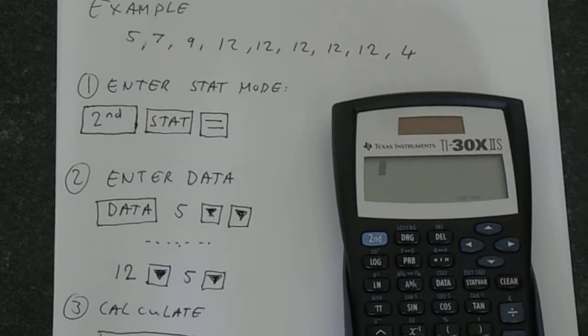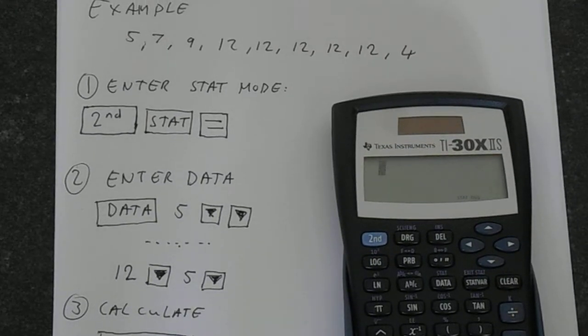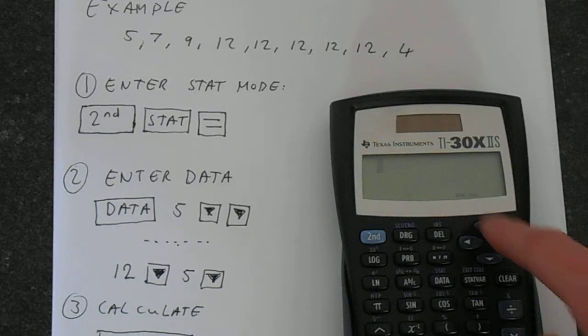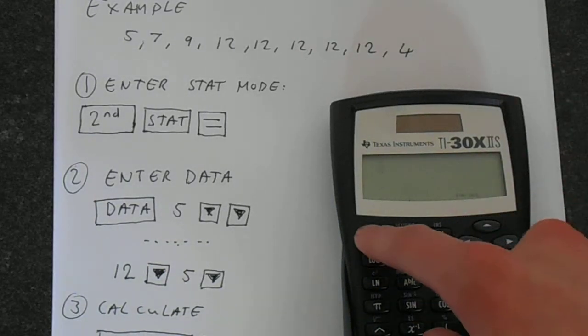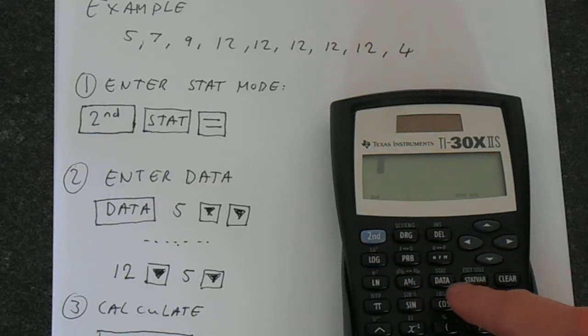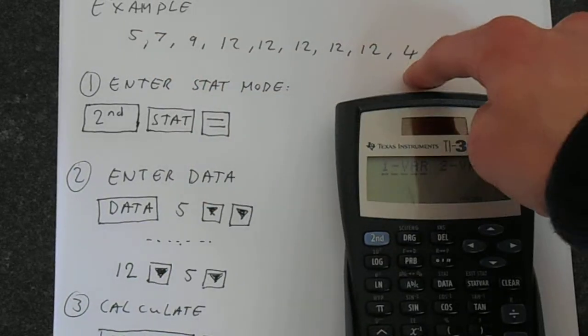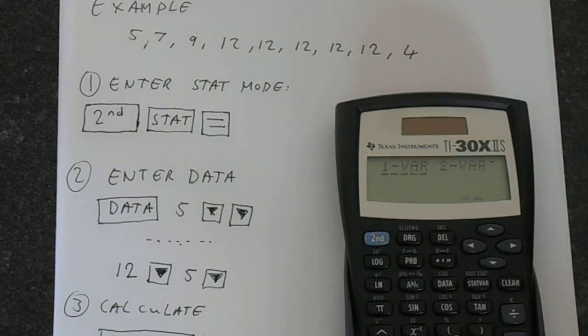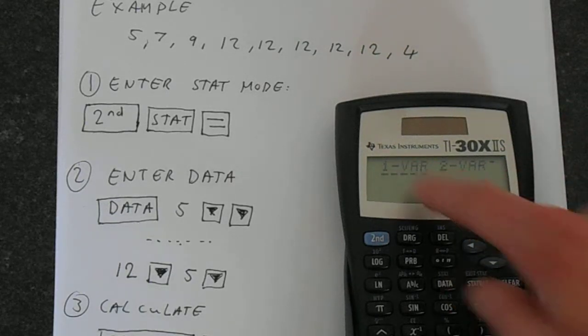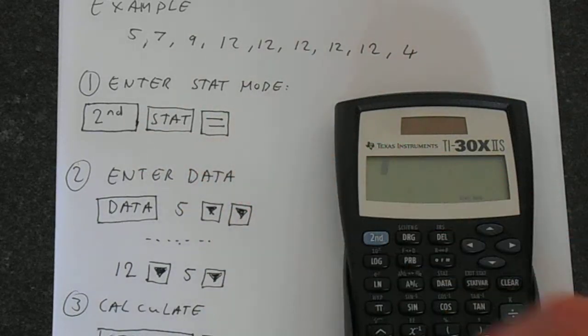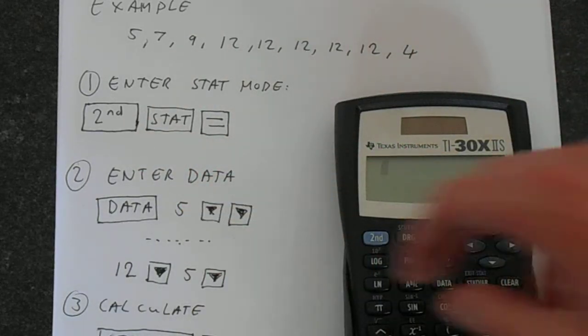The first thing we need to do is get our calculator into stat mode. This one's already in stat mode, but I'll show you again. Second function and then stat, which is on this data key. We want one variable statistics—we've just got one set of data. If we had an X and Y series, maybe doing some sort of regression, you would need two variables. Just press equals. So second function, stat, equals—that gets us into stat mode.